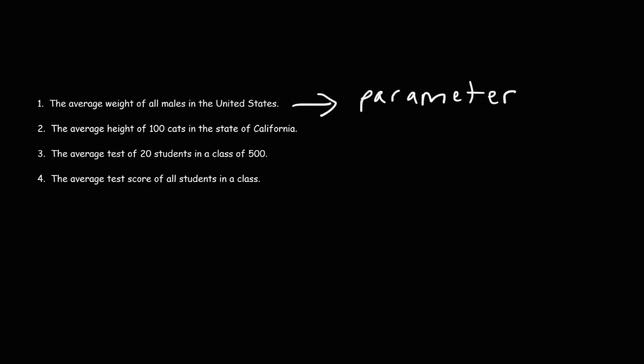Number two: the average height of 100 cats in the state of California. California has millions of cats, so if we're calculating the average height of 100 cats, we're calculating the height of a small subset of the entire population. So this would be a statistic, because our study involves just a small portion of the entire population.